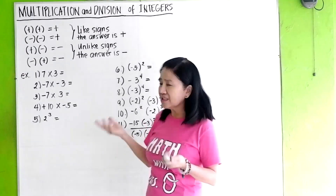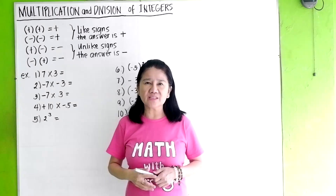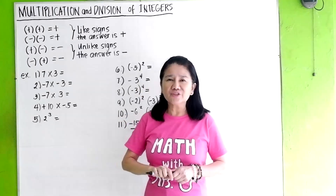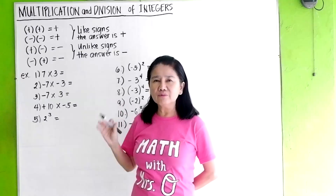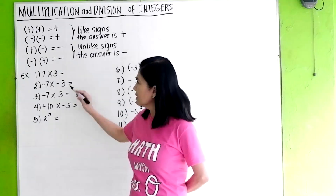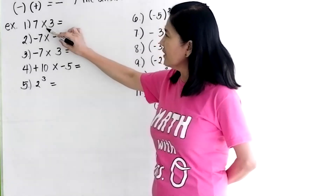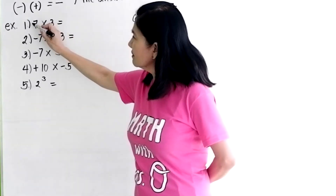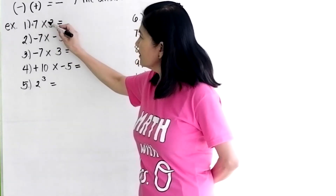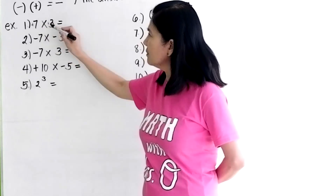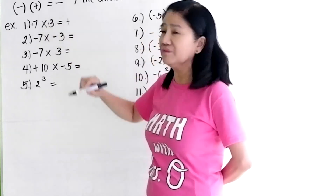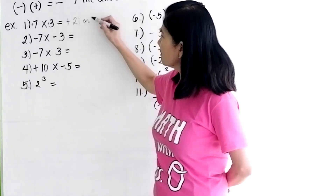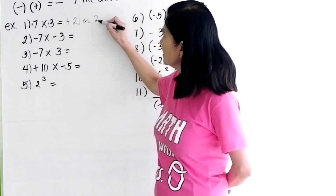Let's take numerous examples so you can really understand the rules. Number 1: 7 times 3. This means 7 is positive and 3 is positive. Positive times positive is positive. 7 times 3 is 21, or you can just write it as 21.